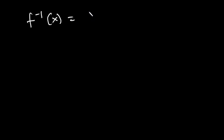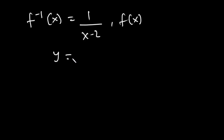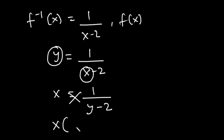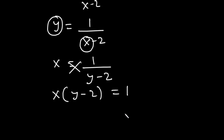Now to confirm that f⁻¹(x) = 1 / (x − 2) is indeed the inverse of f(x), we replace f⁻¹(x) with y, giving y = 1 / (x − 2). Using the same procedure, we interchange x and y to get x = 1 / (y − 2), then cross multiply: x(y − 2) = 1. Distributing x gives xy − 2x = 1.